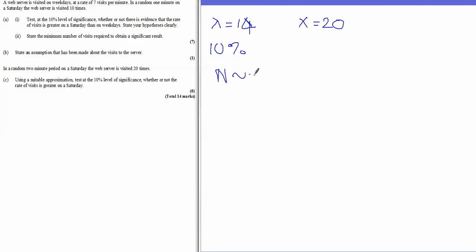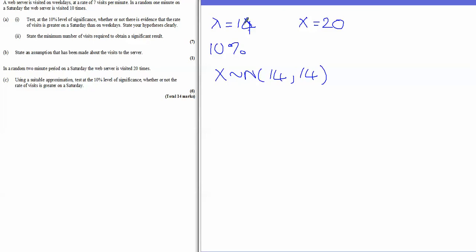We approximate X using the normal distribution. Remember, for a Poisson approximated by a normal, the mean and variance both equal lambda — so in this case both equal 14. The key thing to remember when doing the normal approximation to Poisson is that you must apply the continuity correction.